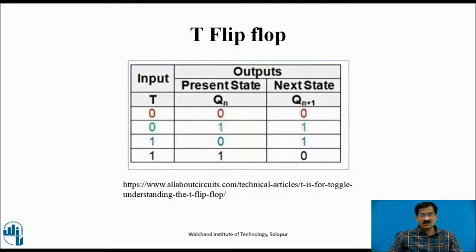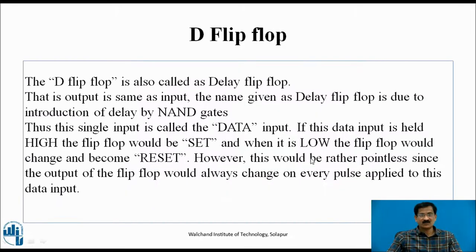This is the truth table for the T flip-flop. When T equals 0, output is 0. When T equals 1 and the previous state is 0, the next state changes to 1. If the previous state is 1, the next state will be 0 — it is nothing but toggling, which is why it is called a T flip-flop.